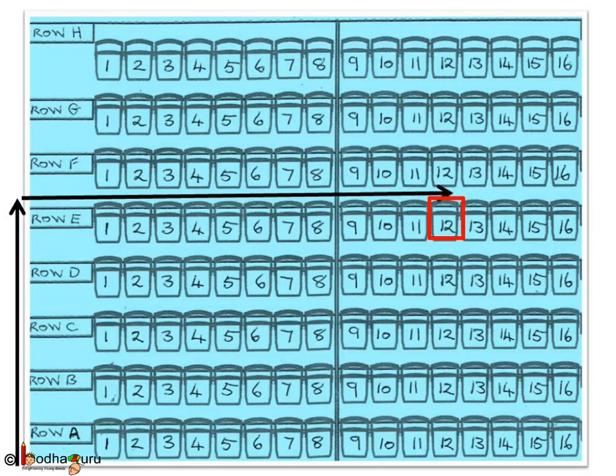It means we first look for the row number and then for the seat number. So E12 means we first go to the row and look for row E. So here is row E. Next we need to find in this row the correct seat number which is 12. So here it is, we go to seat number 12, isn't it? So this is the way you find your seat number while sitting in a cinema hall.